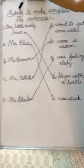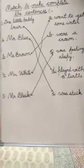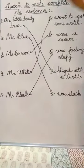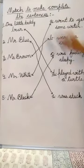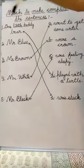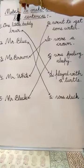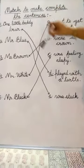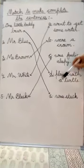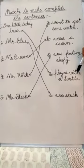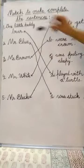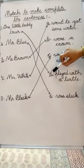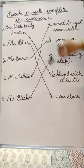Start the next question. Match to make complete the sentences. Two columns are there and you have to do the match. First one: One little teddy bear. What will come? Played with a turtle. So we will match this with D.